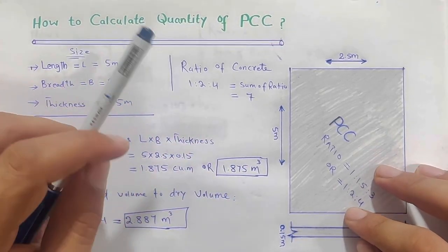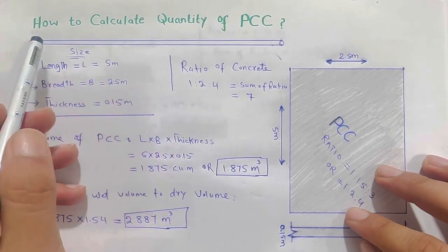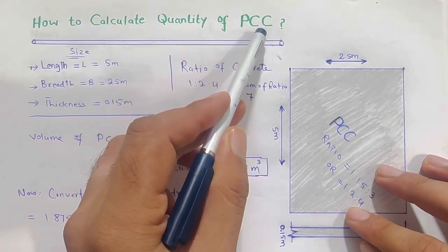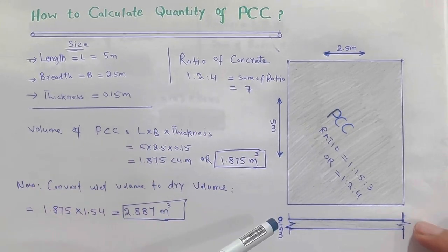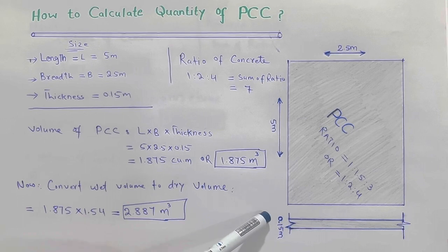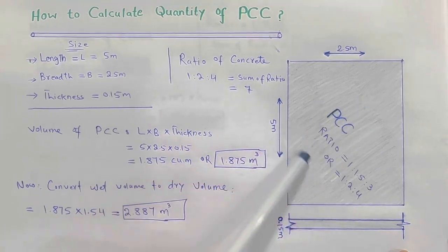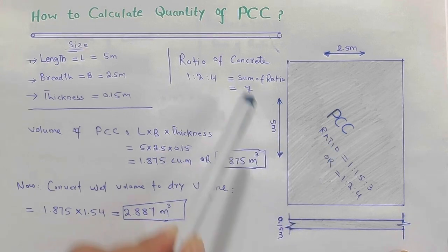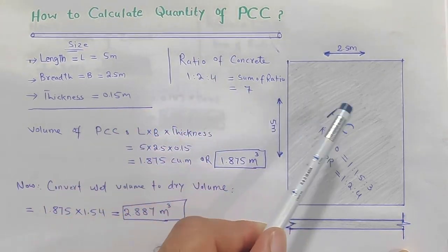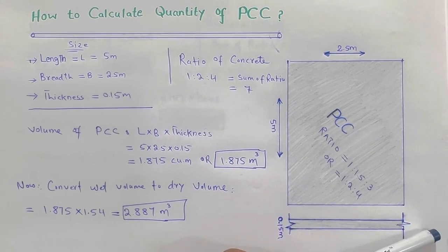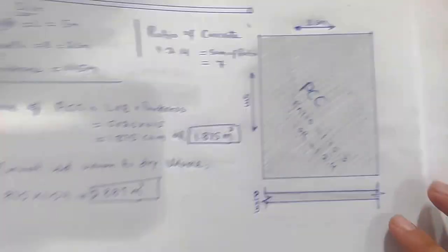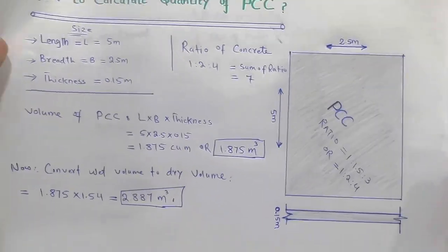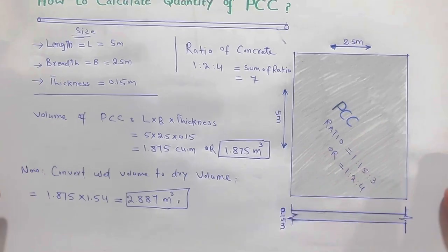Hello guys, welcome back to Several Engineers' YouTube channel. In this video lecture, I will guide you on how to calculate the quantity of PCC - plain cement concrete. As you can see, this is the plan which has a size of 2.5 meter by 5 meter, and this is its cross-section. The thickness of this PCC is 0.15 meter, or 15 centimeter.